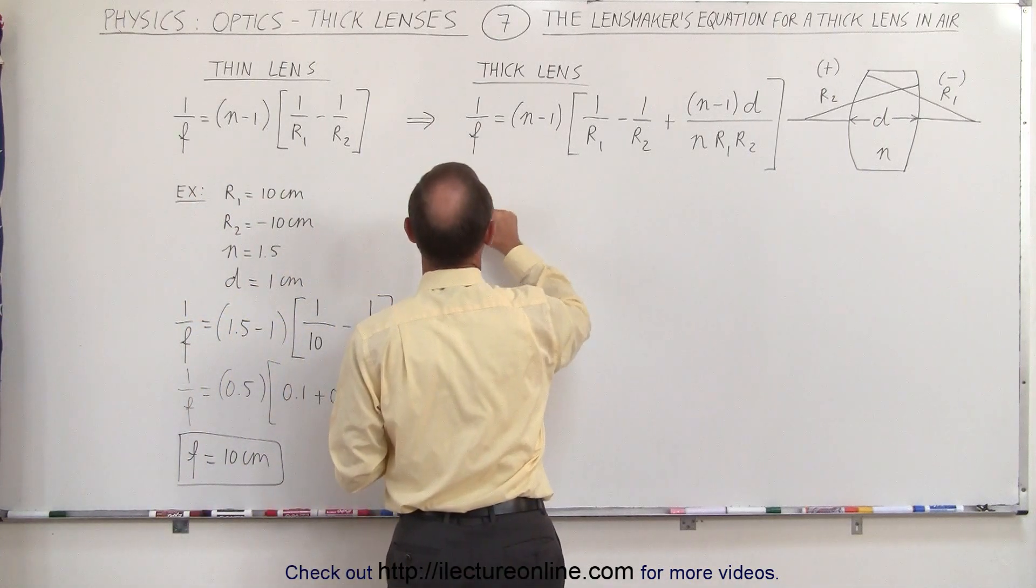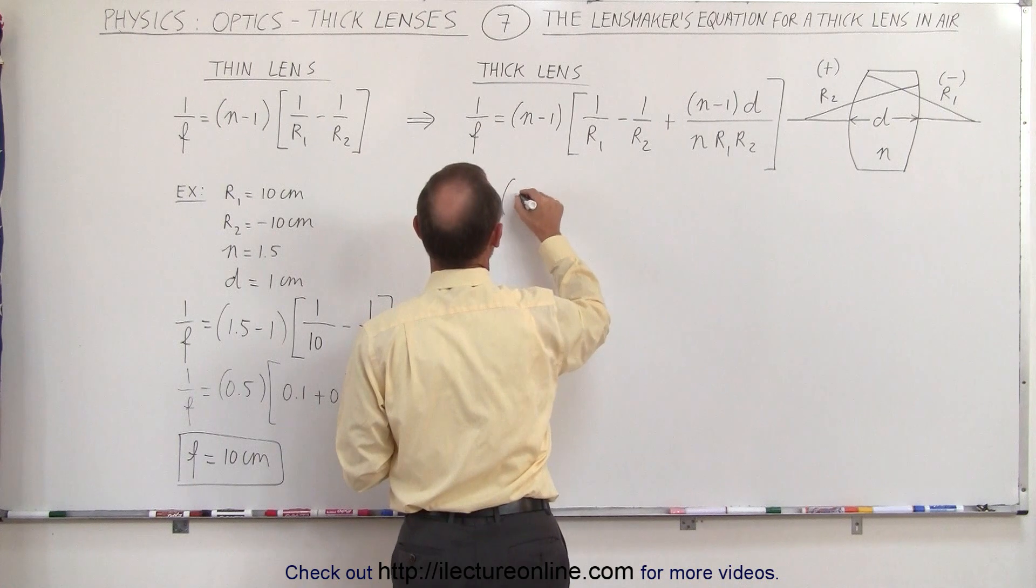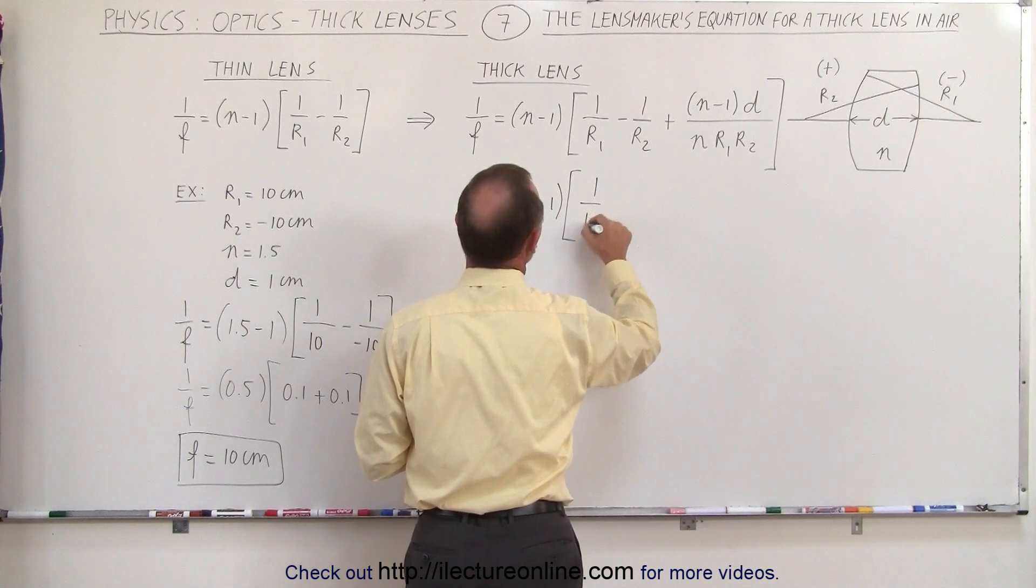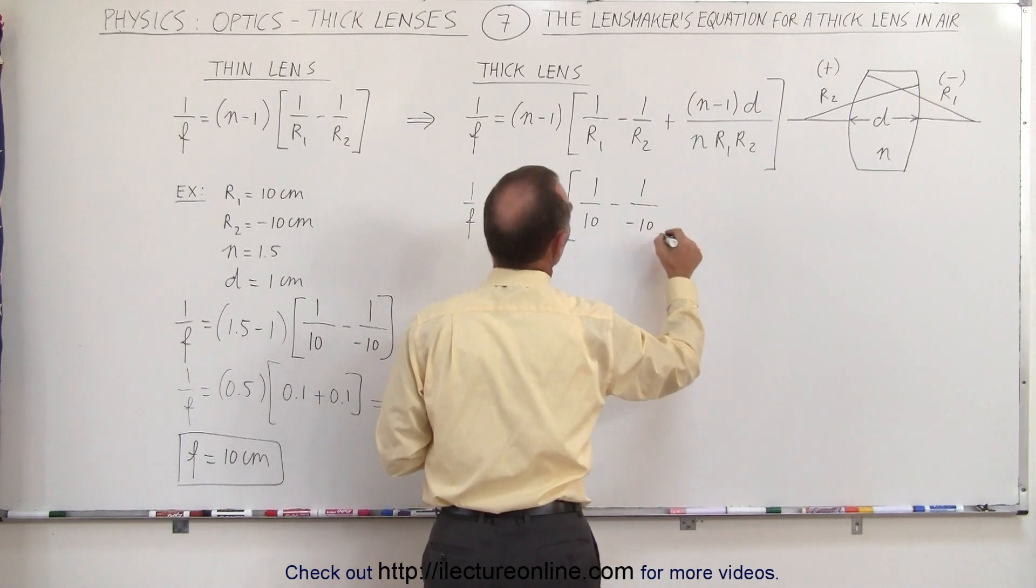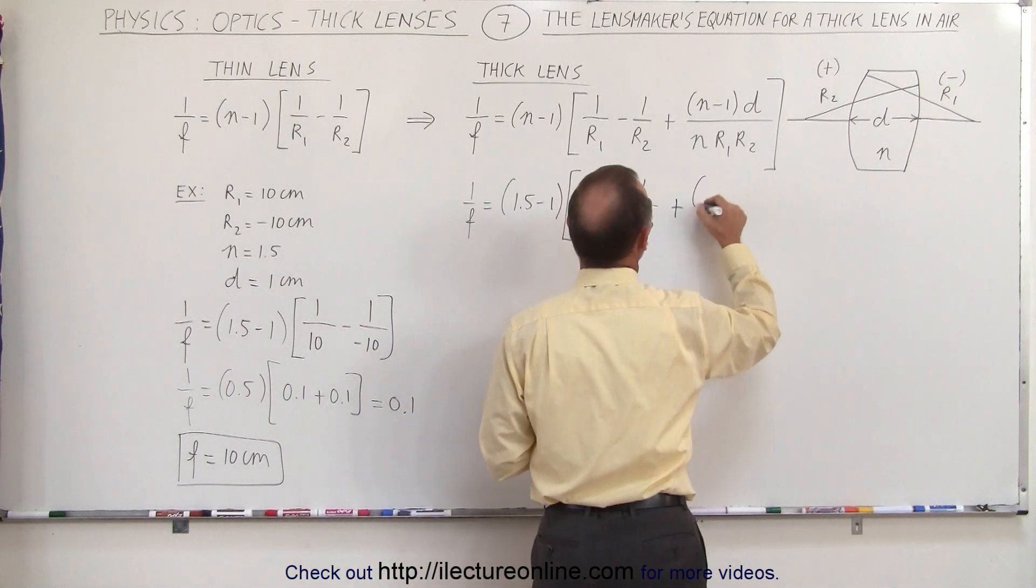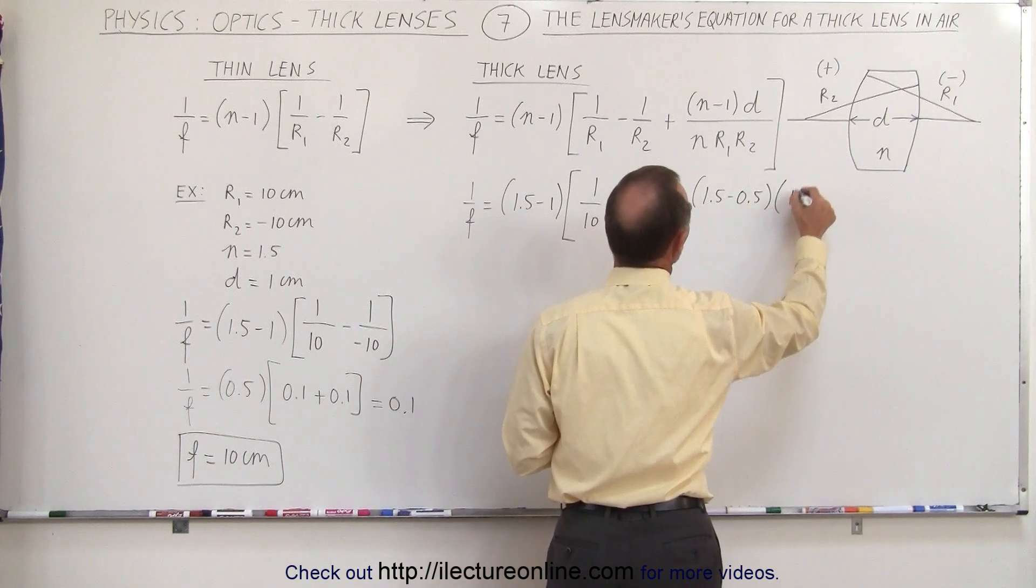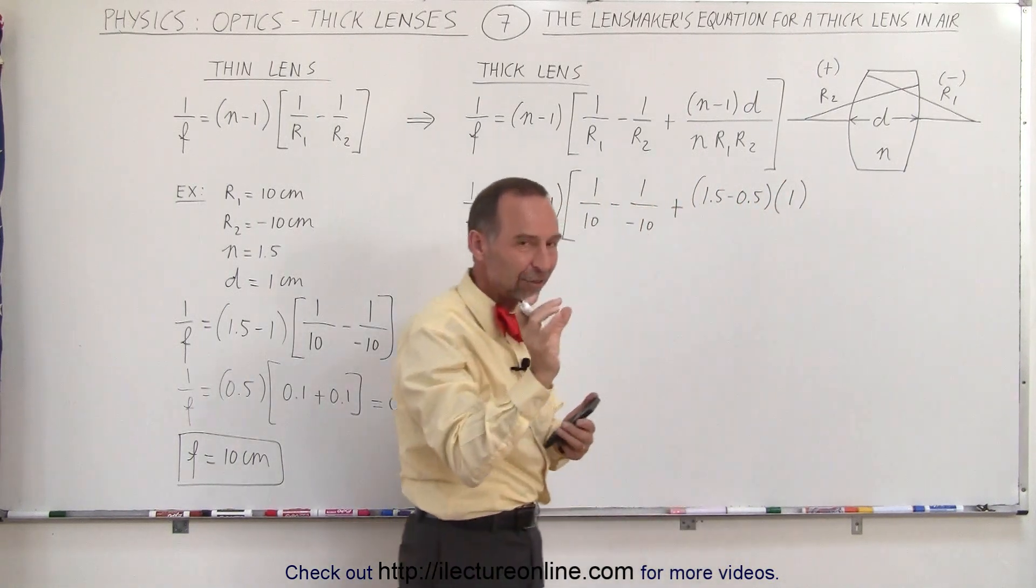So we have 1 over F equals same parameters, 1.5 minus 1, times 1 over 10 minus 1 over a minus 10, then we have plus 1.5 minus 1.